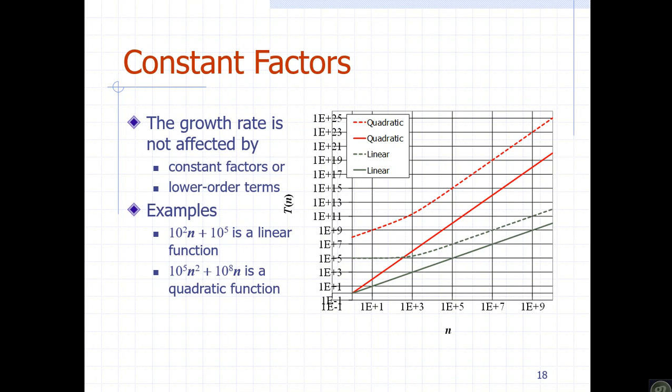The algorithm's time is determined by the growth rate affecting its performance. Especially in the worst case, constant factors and low-order terms are dropped. For example, when the input size n is very large — such as 10 to the power of 5 — we see the growth rate affecting the algorithm significantly. As n increases, the graph of growth rates shows how the algorithm is affected. The constant factor is just a minor contribution compared to the dominant growth term.